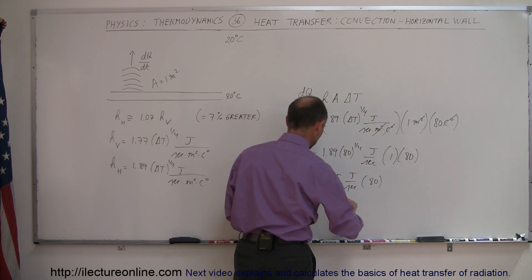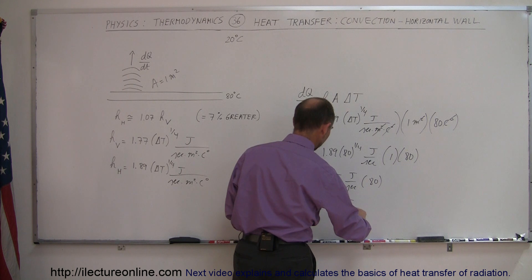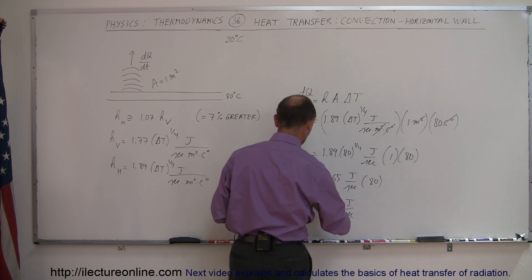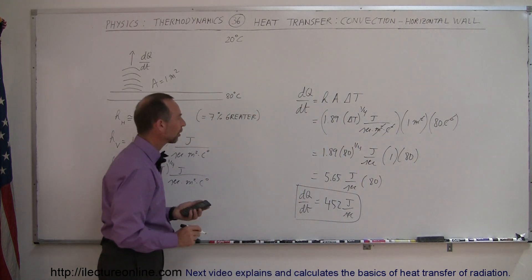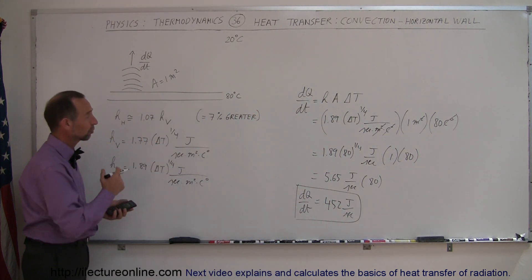And that gives us 452 joules per second. That would be lost through convection if we had a horizontal surface like that, where the temperature difference was...